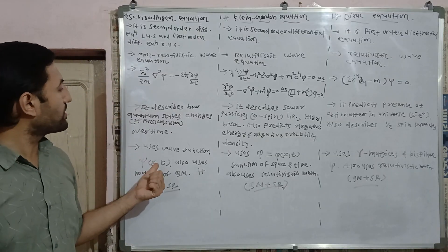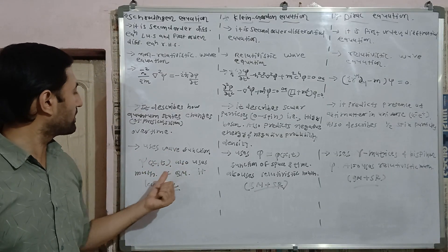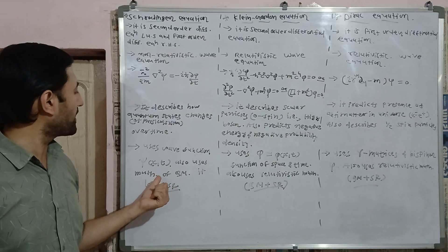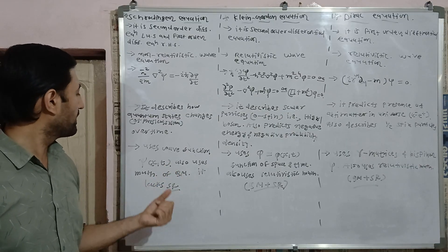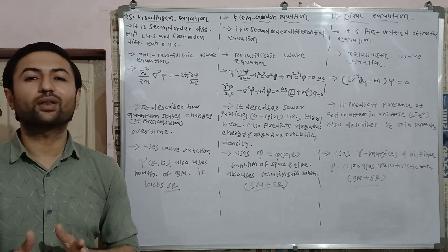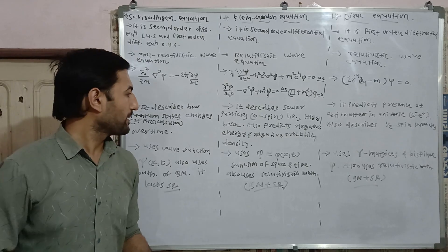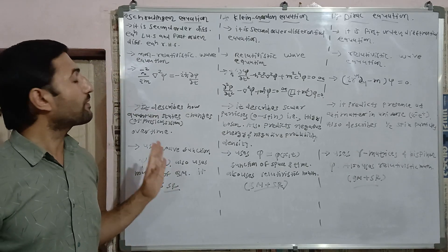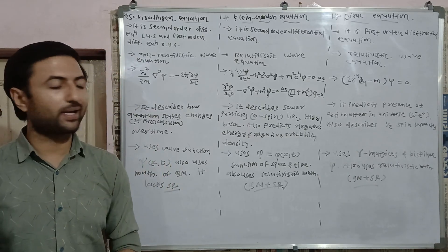Schrodinger equation uses wave function, that is psi of x t, also uses mathematics of quantum mechanics but it lacks special theory of relativity. And that is why it is equation of quantum mechanics.